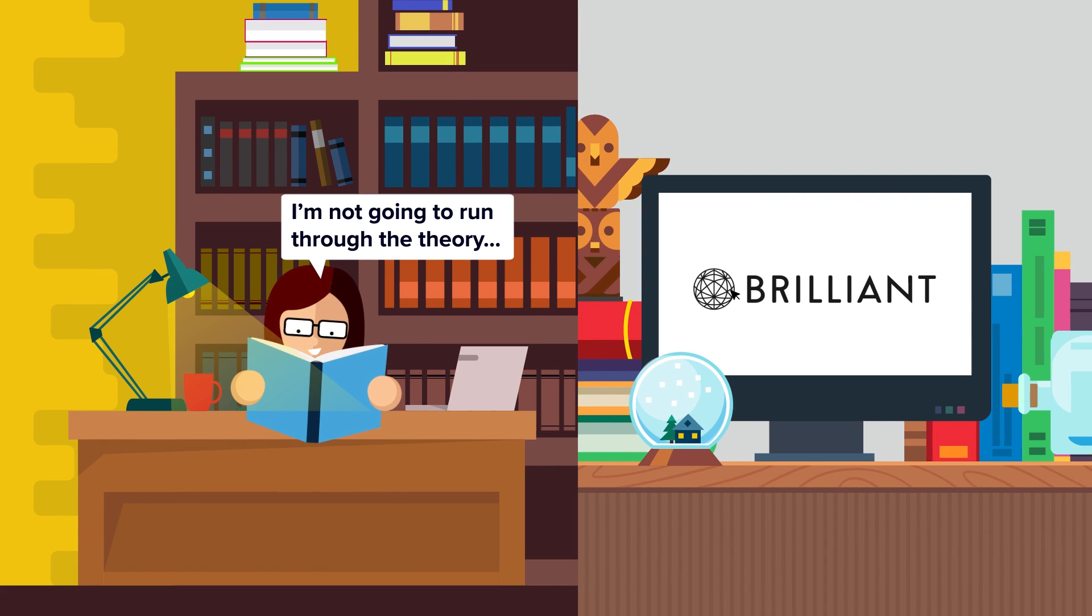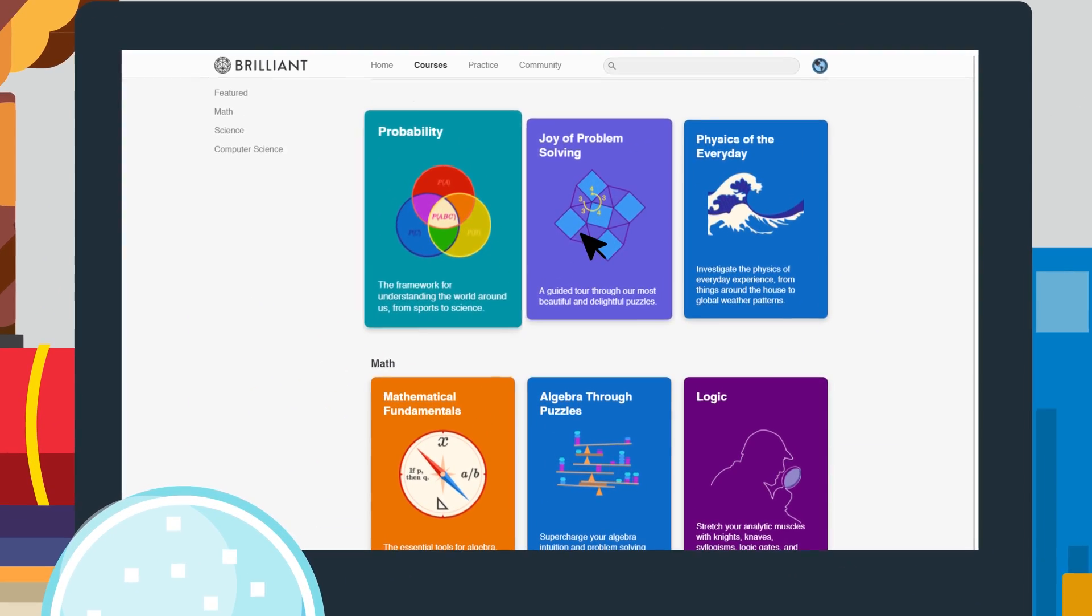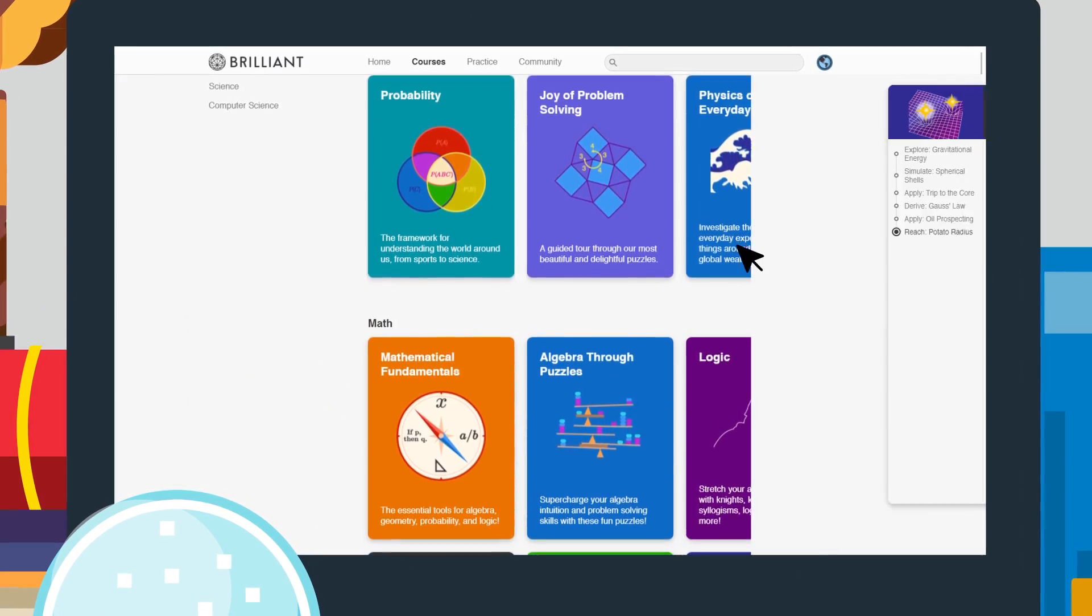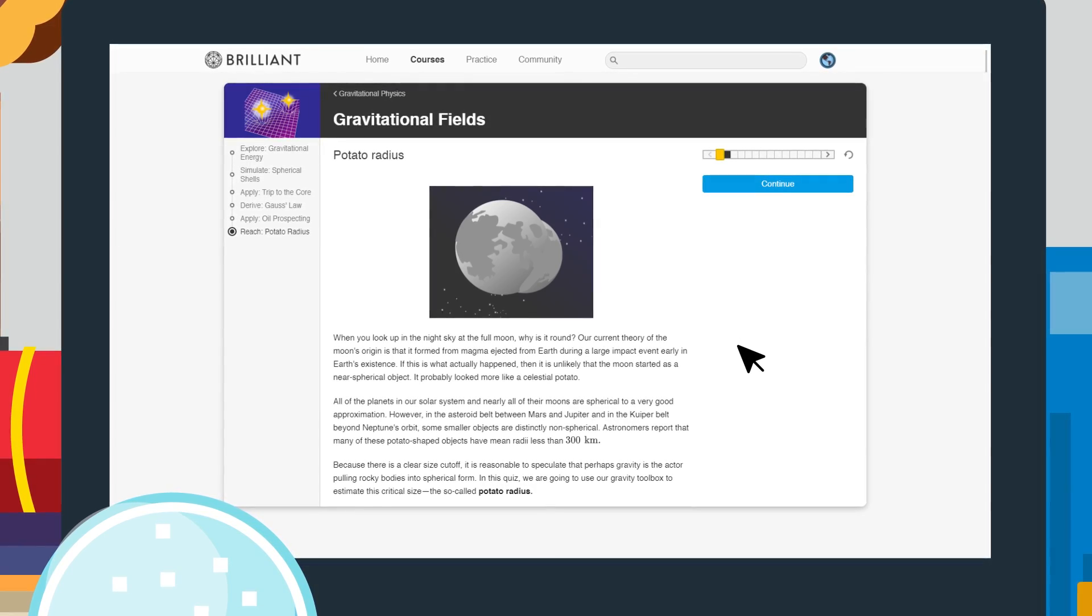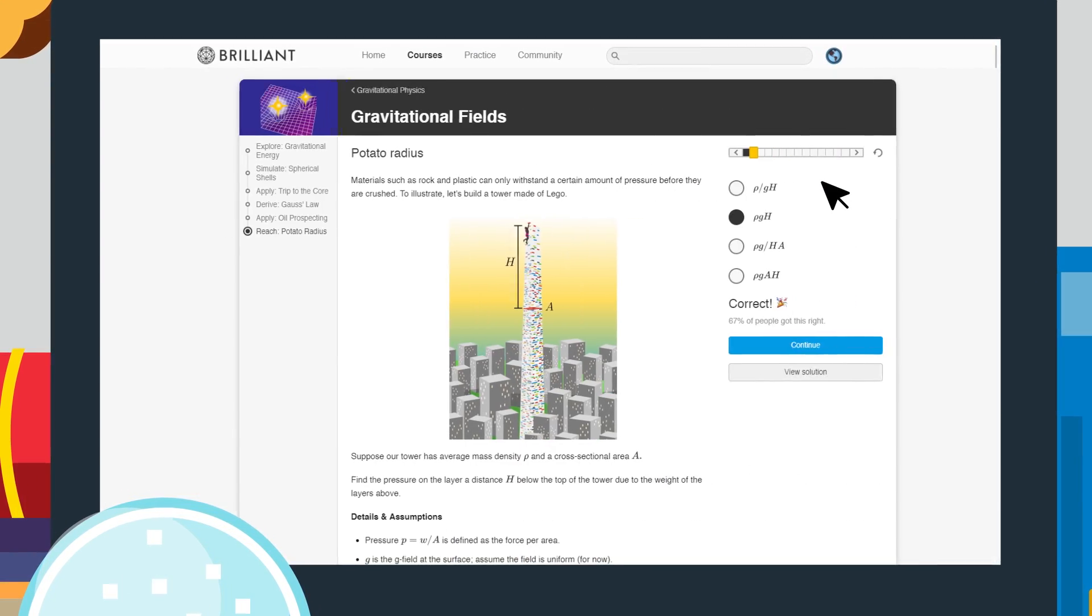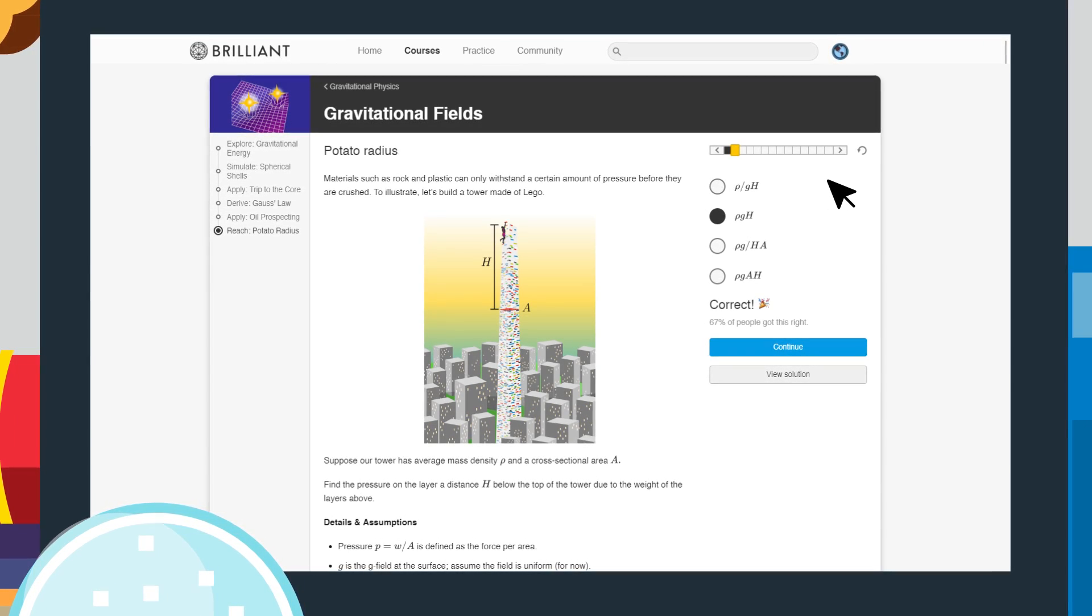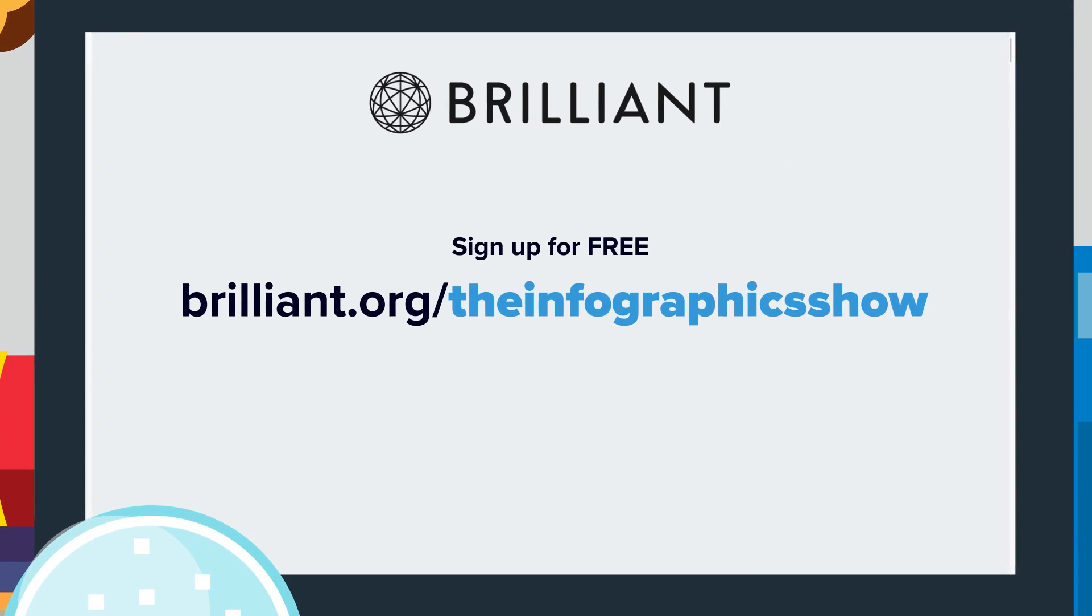They are a problem-solving website that teaches you how to think like a scientist by guiding you through problems. They have an entire course on gravitation where in addition to interplanetary orbits, black holes and dark matter, you can learn exactly how protoplanets crush themselves into balls, starting from the very intuition we got from the Lego Tower at the beginning of this video.